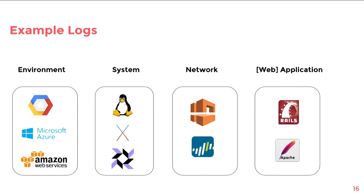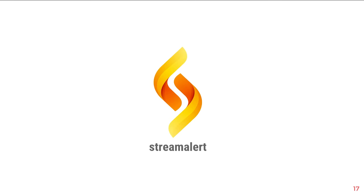The types of logs supported include web application-style logs like Ruby on Rails or Apache, network-style logs like Palo Alto network logs and VPC flow logs, system-level logs like syslog, and environment-level logs from AWS, Azure, or whatever your cloud provider is. After this talk, you'll be able to deploy StreamAlert with ease. I'll walk through the design, how to send data for analysis, writing rules to trigger real-time alerts, and finally the deployment.